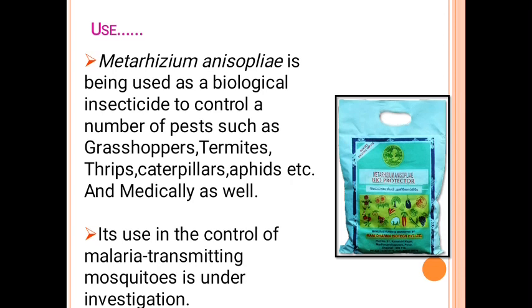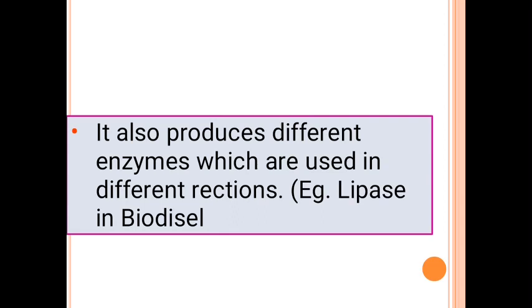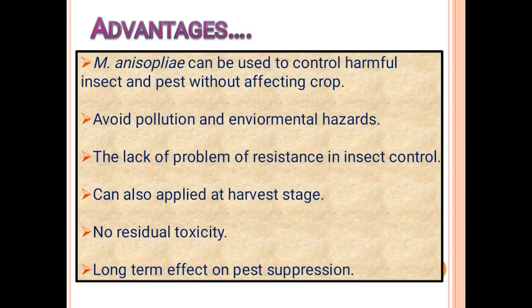Uses of Metarhizium anisopliae: it is used as a biopesticide to control numerous pests and is also used to control malaria-transmitting mosquitoes. It also produces enzymes used in different reactions — for example, lipase enzymes are used in biodiesel production. Advantages: it can be applied at the time of harvesting, is non-pollutive, eco-friendly, and provides long-term effects on pest suppression.